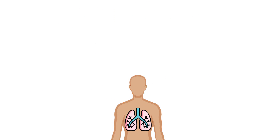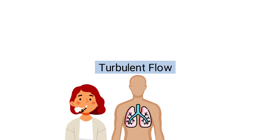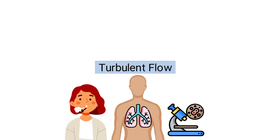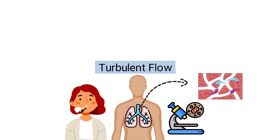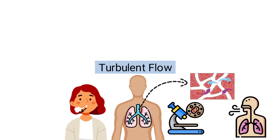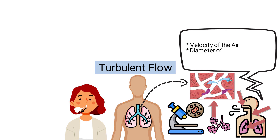In the context of the human lungs, turbulent flow plays a crucial role in respiratory mechanics, particularly during forceful breathing or in certain pathological conditions. The respiratory system, consisting of airways and lung structures, is primarily designed for gas exchange. Air travels through the nose or mouth, down the trachea, through the bronchi, and finally into the alveoli where oxygen is exchanged for carbon dioxide. The nature of airflow within these structures depends on several factors including the velocity of the air, the diameter of the airways, and the physical properties of the air.